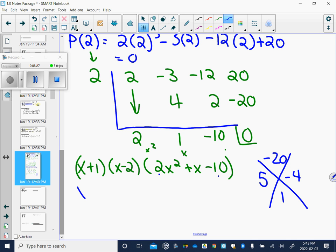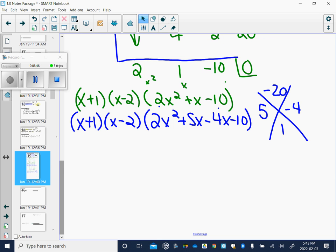Okay. So keep those first two factors. We have x plus 1 times x minus 2 times 2x squared plus 5x minus 4x minus 10. Okay. Now I'm going to do some grouping. Sorry, I should group like that.